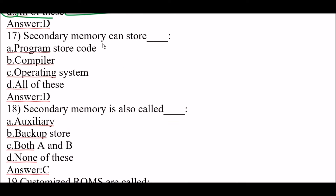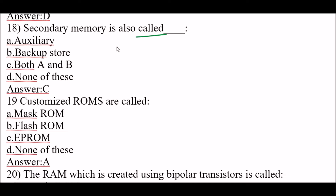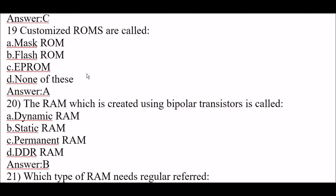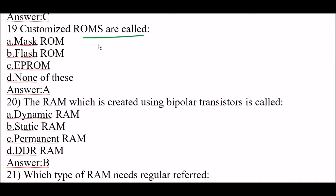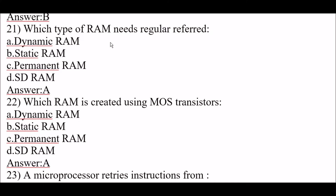Next question: secondary memory can store programs, code, compilers, and operating systems. The right answer is option D, all of these. Next question: secondary memory is also called auxiliary memory as well as backup store memory. Next question: customized ROMs are called mask ROMs.